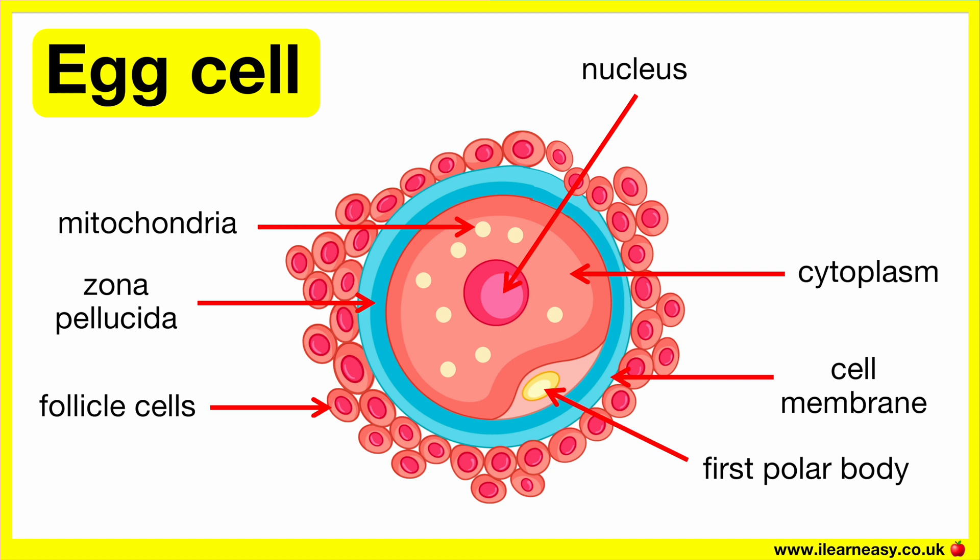The haploid nucleus contains genetic material for fertilisation. The egg cell cytoplasm contains nutrients required for the growth of the early embryo. The cell membrane regulates the exchange of substances, protects the cell, and facilitates fertilisation by interacting with the sperm.